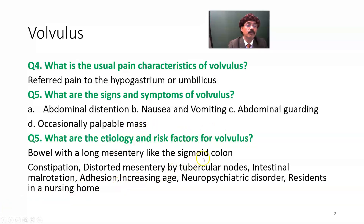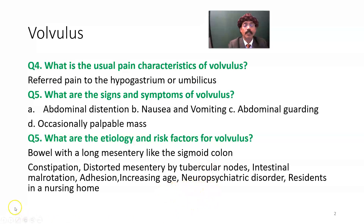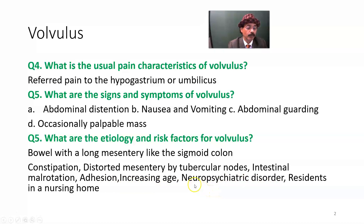What are the etiology and risk factors for volvulus? Bowel with a long mesentery, like the sigmoid colon, has more chance to get volvulus. Constipation, distorted mesentery by tubercular nodes, intestinal malrotation, adhesion, history of previous surgery, increasing age — age over 60, neuropsychiatric disorder such as Parkinson's disease or other neurological diseases, and residents in a nursing home.